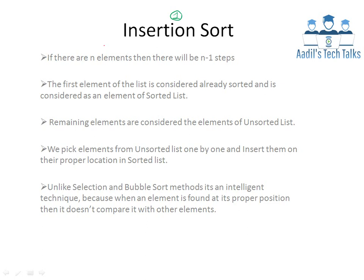Insertion sort is a sorting technique in which if there are n elements, then there will be n minus 1 steps. Suppose if you have 5 elements, then there will be 5 minus 1, means 4 steps in the entire method. The first element of the list is considered already sorted and is considered as an element of the sorted list. If this is the list and there are some elements, then we divide that list into sorted and unsorted. The first element is considered part of the sorted list and the remaining elements are considered part of the unsorted list.